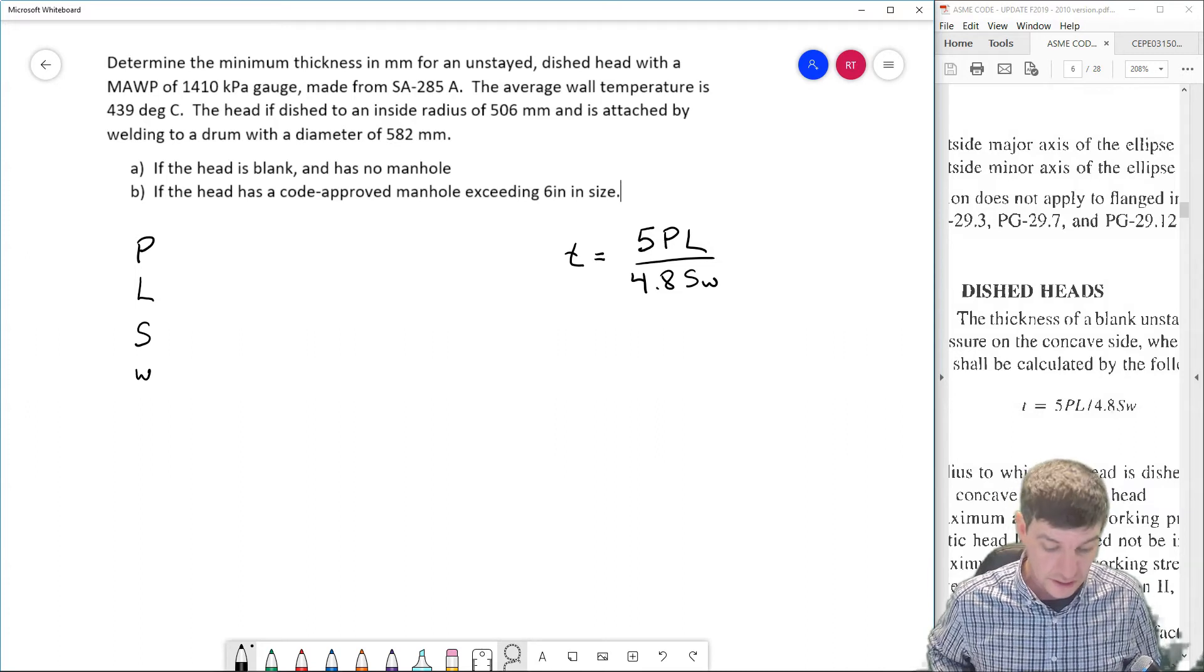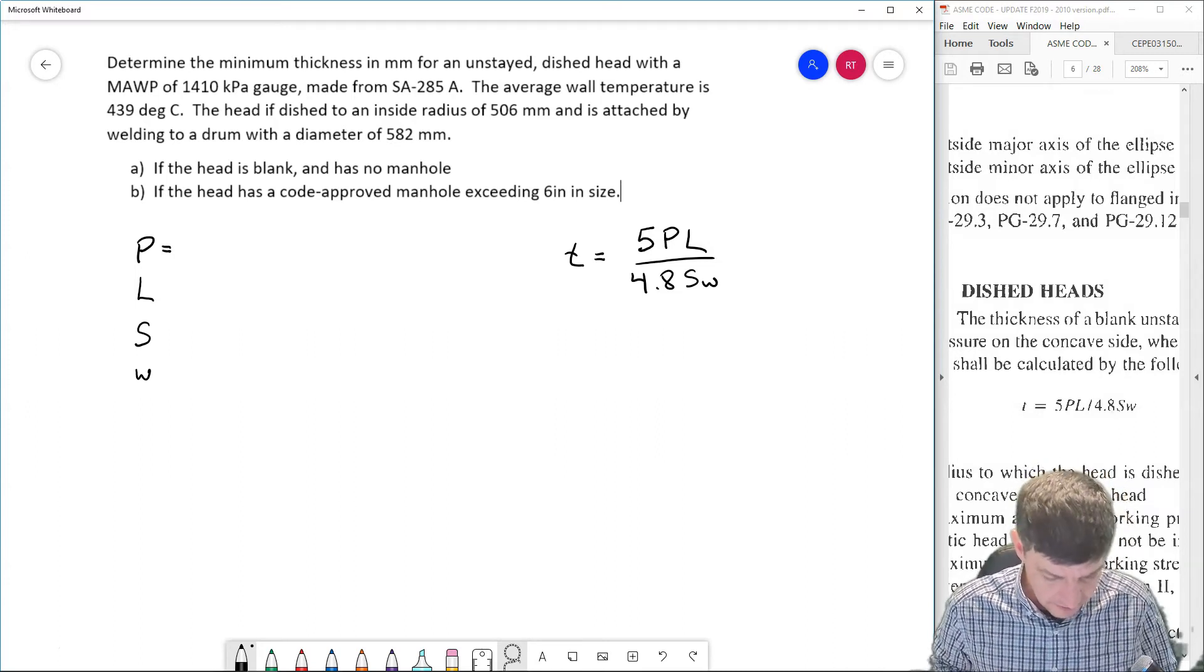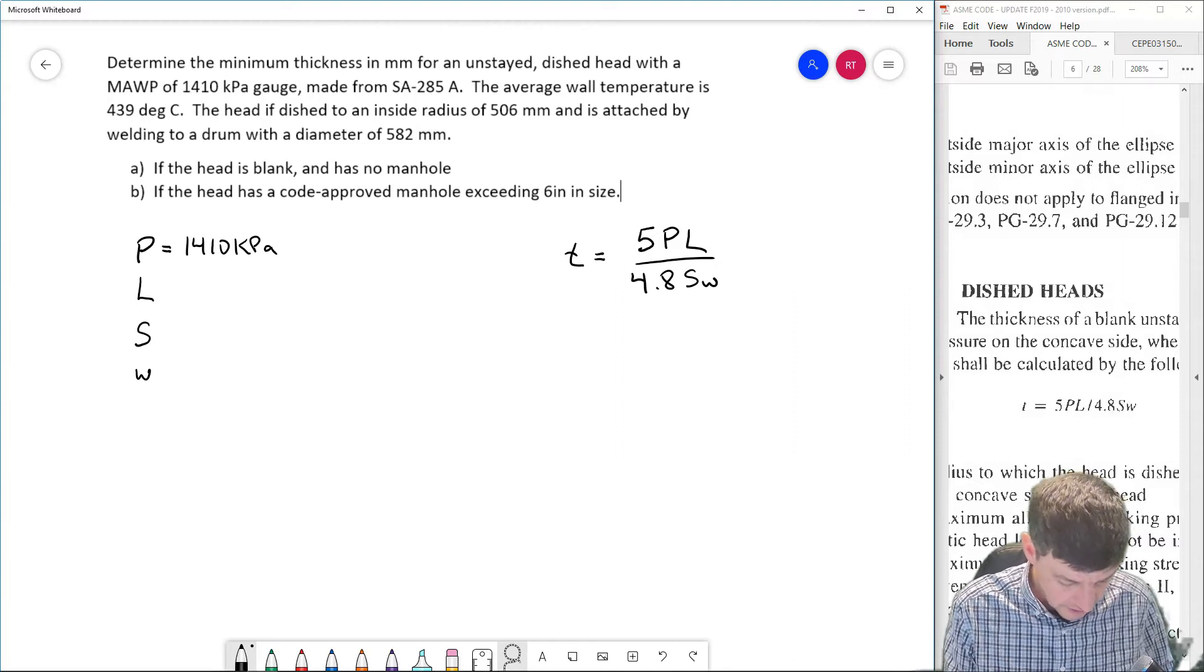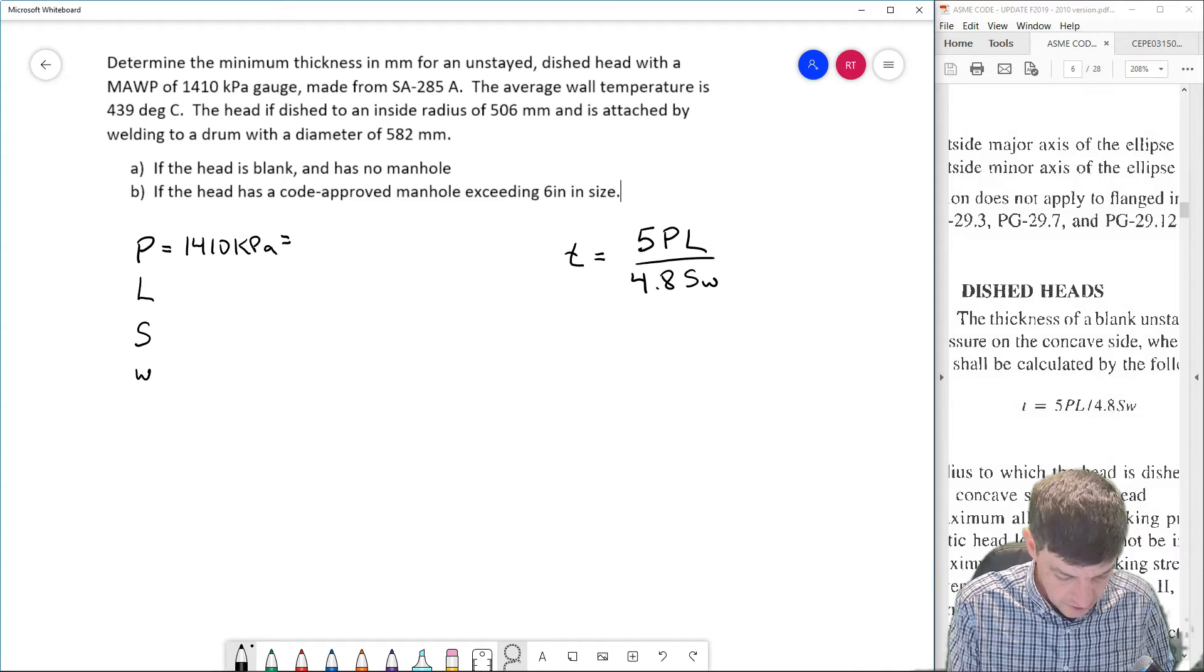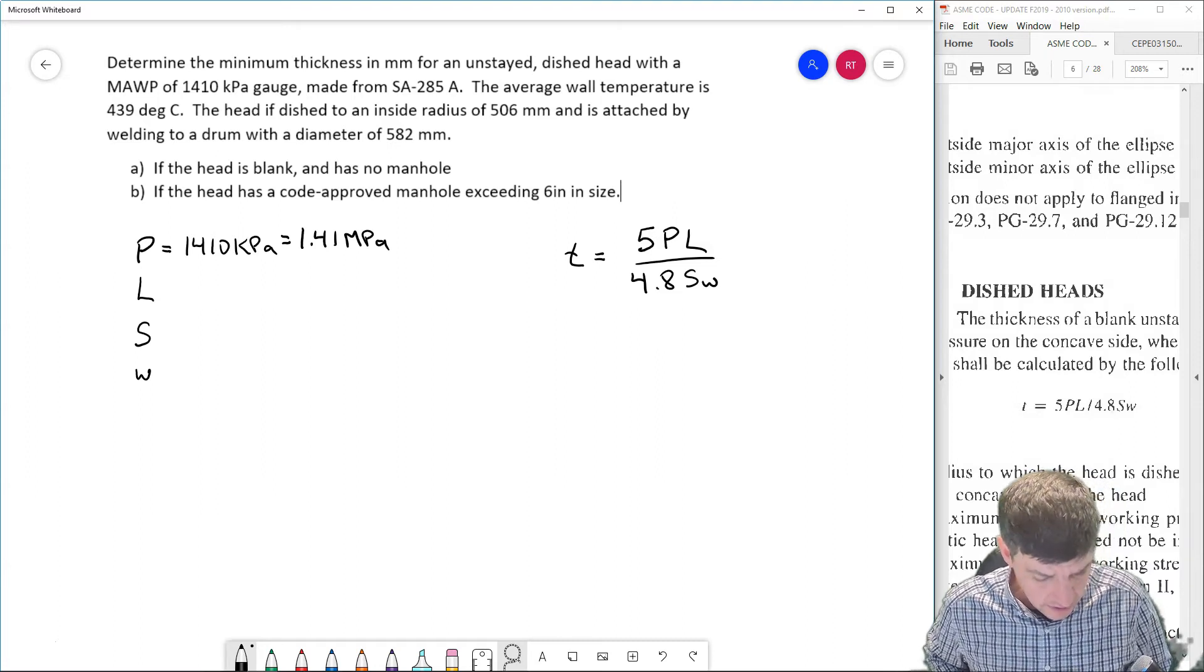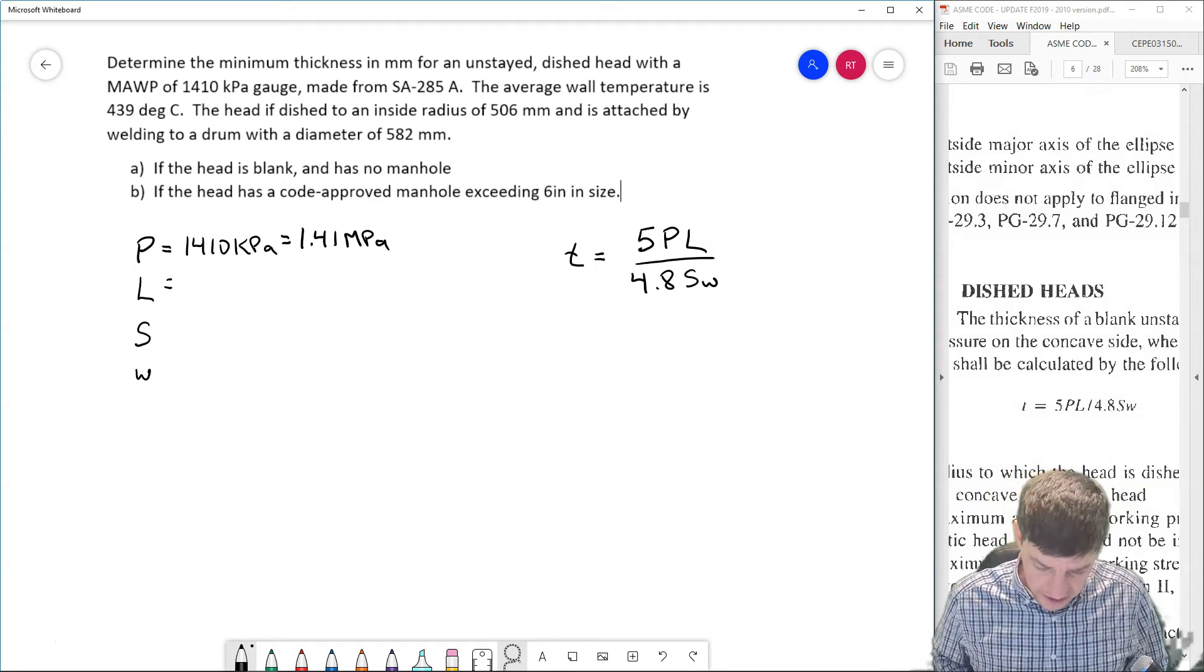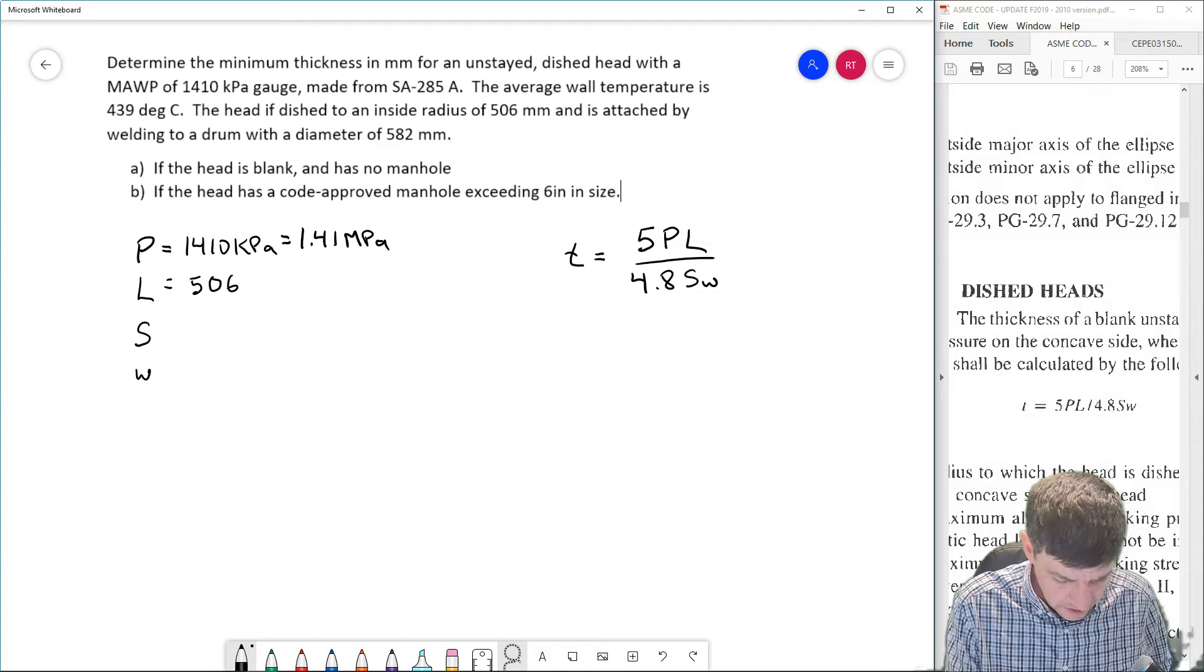Okay, now I go and read the question and see if I know any of those things. So P is going to be my pressure, 1410 kPa gauge. Remember that we want that to be in megapascals as our standard for pressure, so 1.41 MPa gauge is the pressure that I want. L is going to be the inside radius that it's dished to, so 506 millimeters.